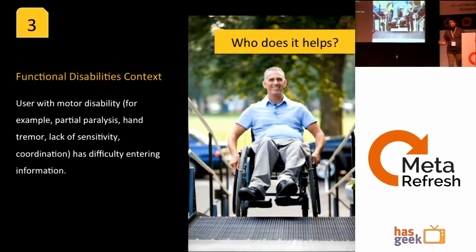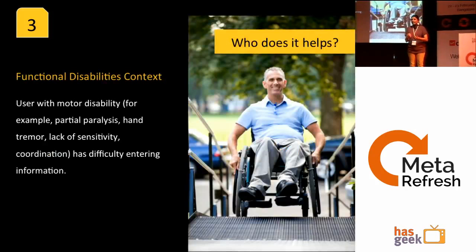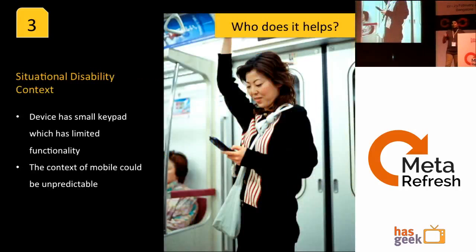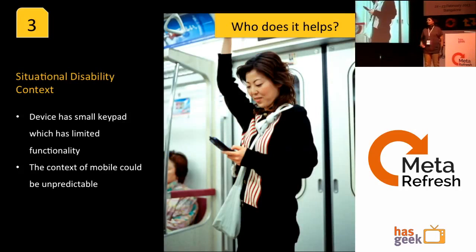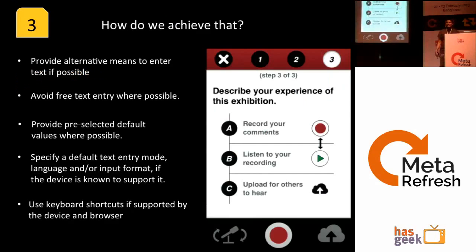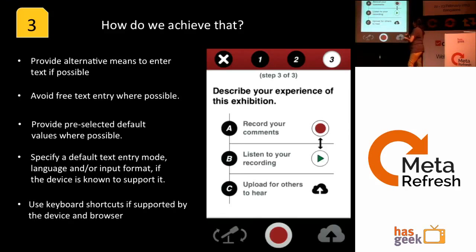That is the reason we should have minimum text input. A lot of people face problems when trying to input text into forms. Who does it help? It helps people with motor disabilities — paralysis, fractures — who may only have one hand available. It also helps in outdoor contexts when one hand is busy. To achieve this, we can use alternate means like voice recording converted to text, and pre-selected dropdowns and values.